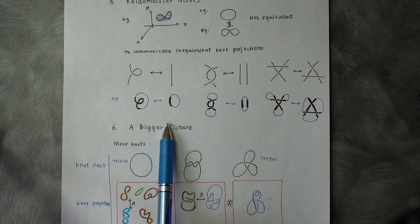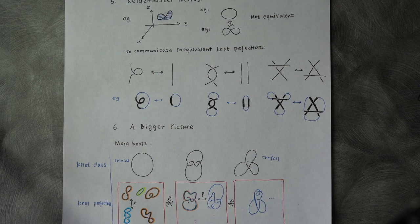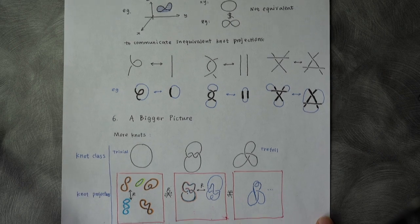Then we get a trivial knot. With Reidemeister moves, we can organize our knot and knot projections in this way.